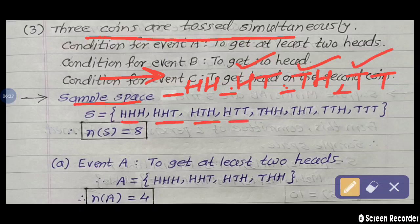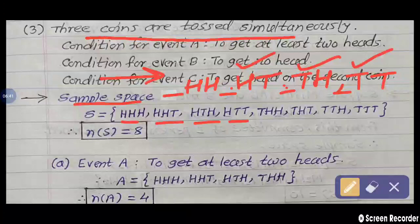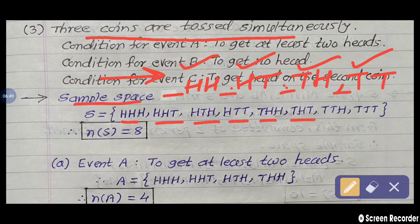Now take tail and write it at the first position in those above sample points. So we get T-H-H, then T-H-T, then T-T-H, and last one is T-T-T. So how many are there in total? Eight. Sample points in the sample space — N of S is equal to eight.